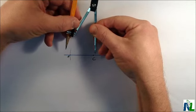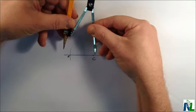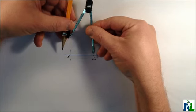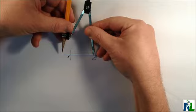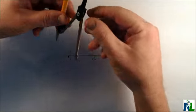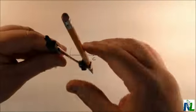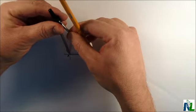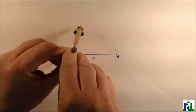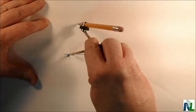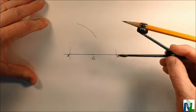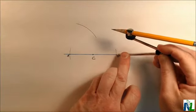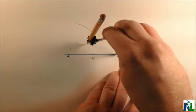Now I want to open up my compass a little bit because I want a distance that's greater than the distance between C and A or C to B. So that distance there is greater than the distance from C to A. I'll put the pointy in now on A. And I'm going to draw an arc up here. I'm going to keep the same opening on the compass, put the pointy part on B. And I'm going to draw an arc up here.